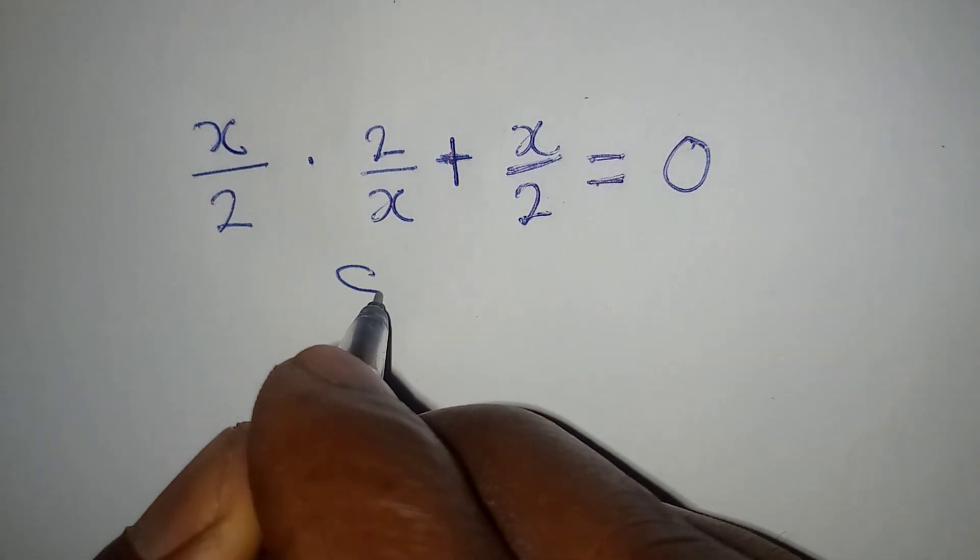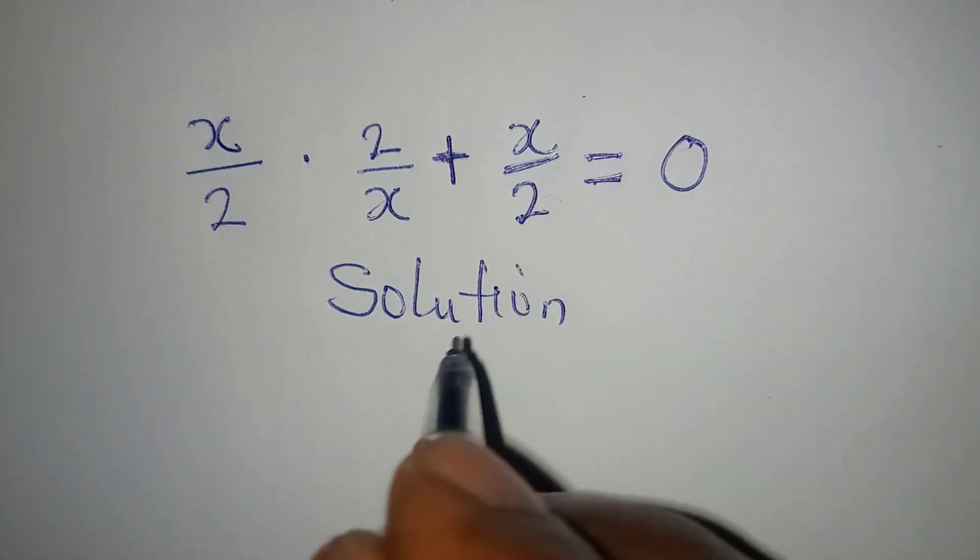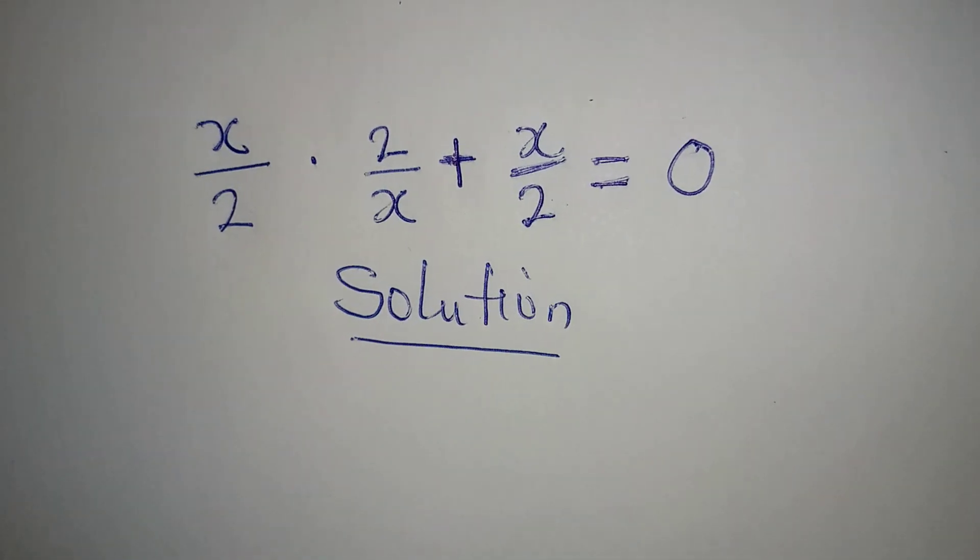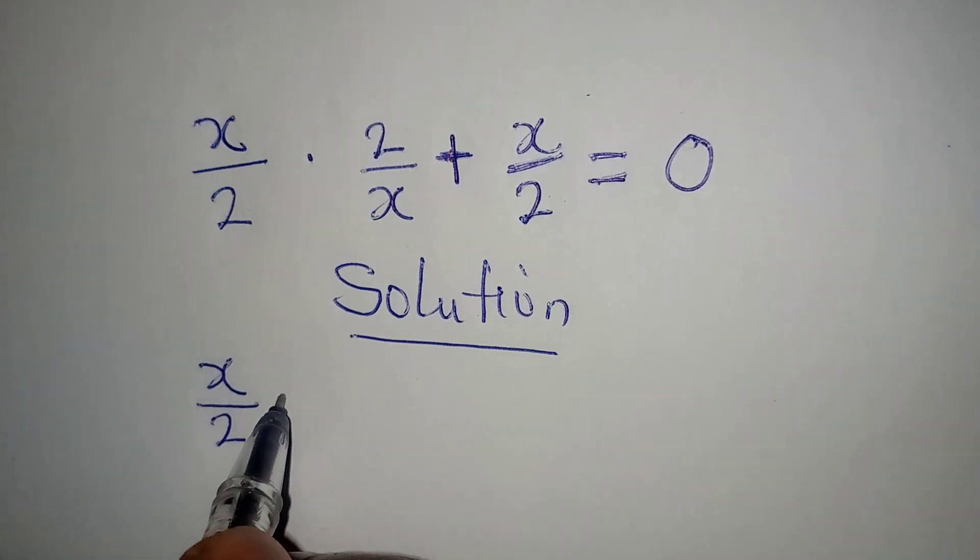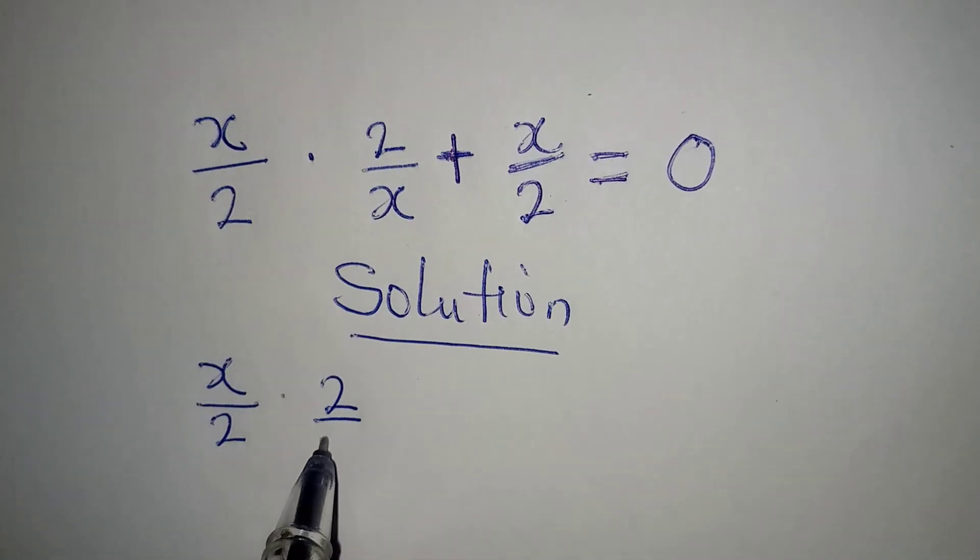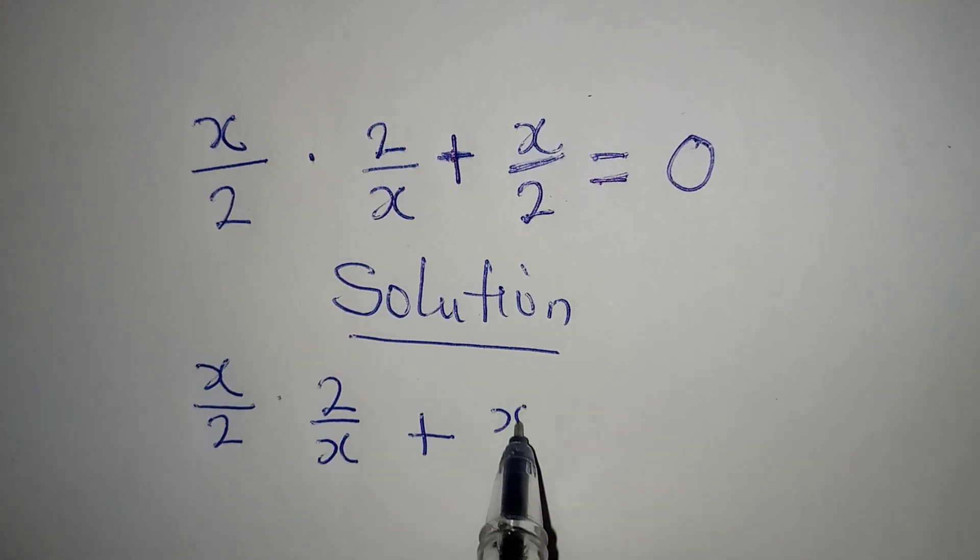Hello everyone, let us provide the solution to this problem: x over 2 multiplied by 2 over x plus x over 2 is equal to 0.